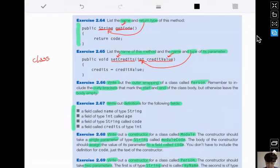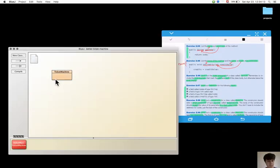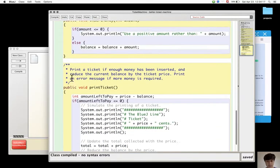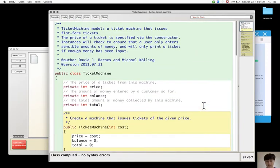For the third exercise, the outer wrapping will look like this: class Person, and then the curly brackets with an empty body. Maybe I missed something. Let's look at the ticket machine class to compare. Oh yes, the public keyword.